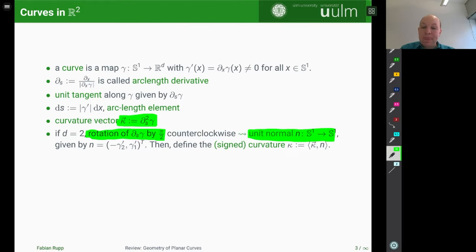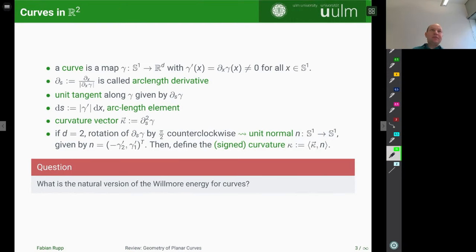And with respect to this unit normal, you can then define a scalar notion of curvature, which I call the signed curvature or just curvature, which is given by the inner product of the curvature vector and this normal. So of course, it's not entirely obvious what the natural notion or version of the Willmore energy for curves, even in the plane, should be. And actually, I want to give you two candidates for this for a generalized notion of Willmore energy. And we will later discuss in which sense this embeddedness and self-intersection detection can work for these energies.